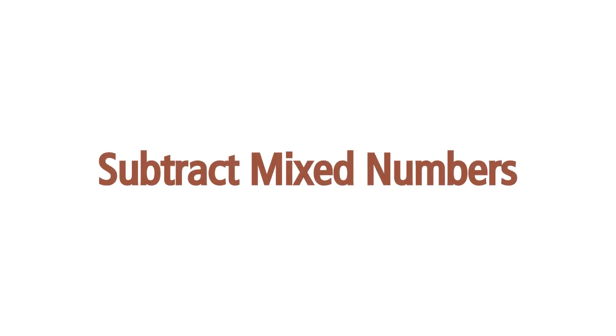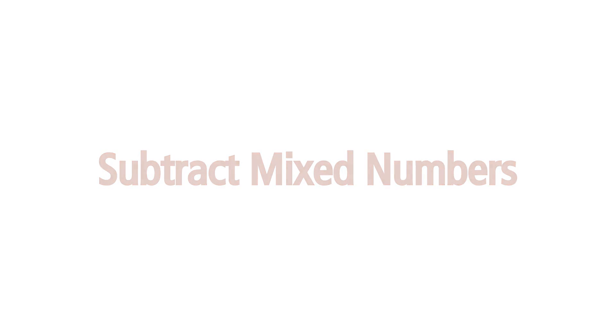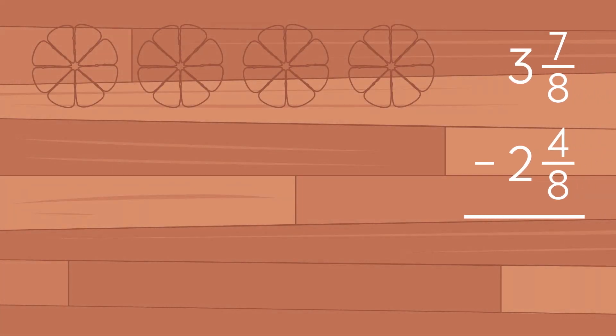Subtract mixed numbers. We want to subtract 3 and 7 eighths minus 2 and 4 eighths. First, we draw a model.